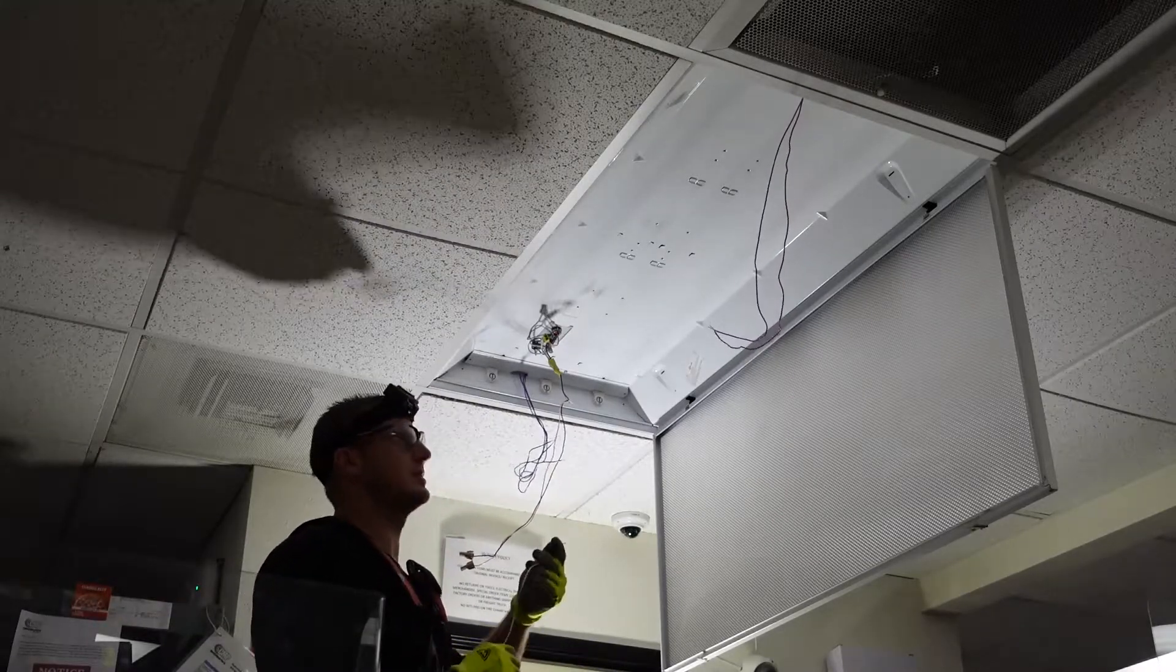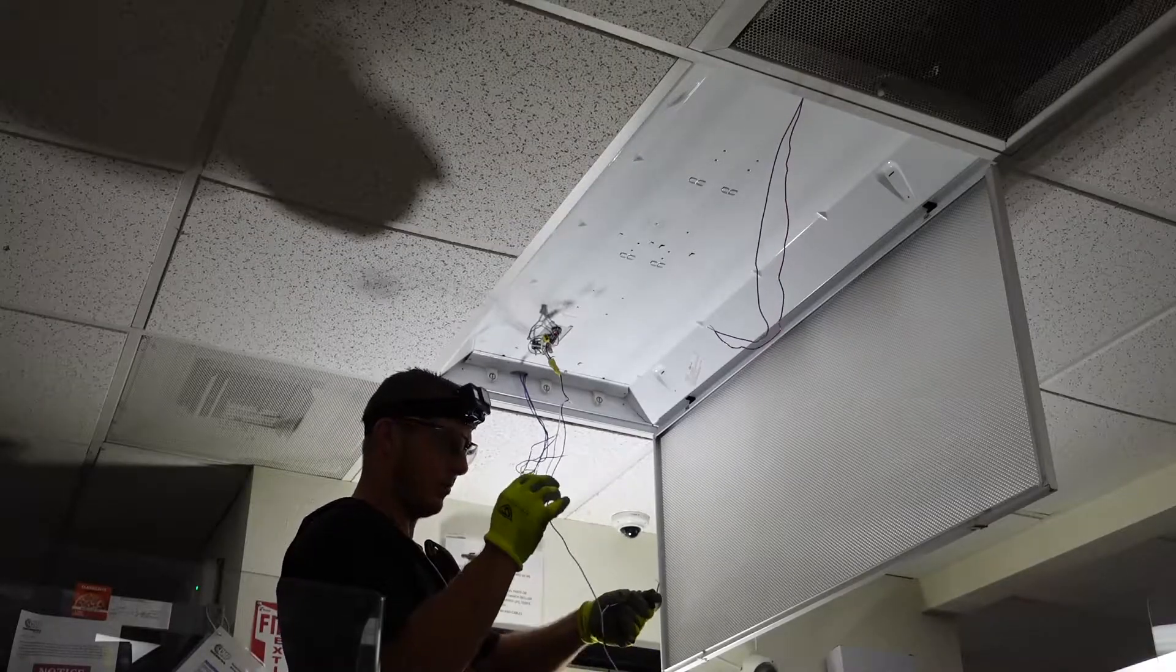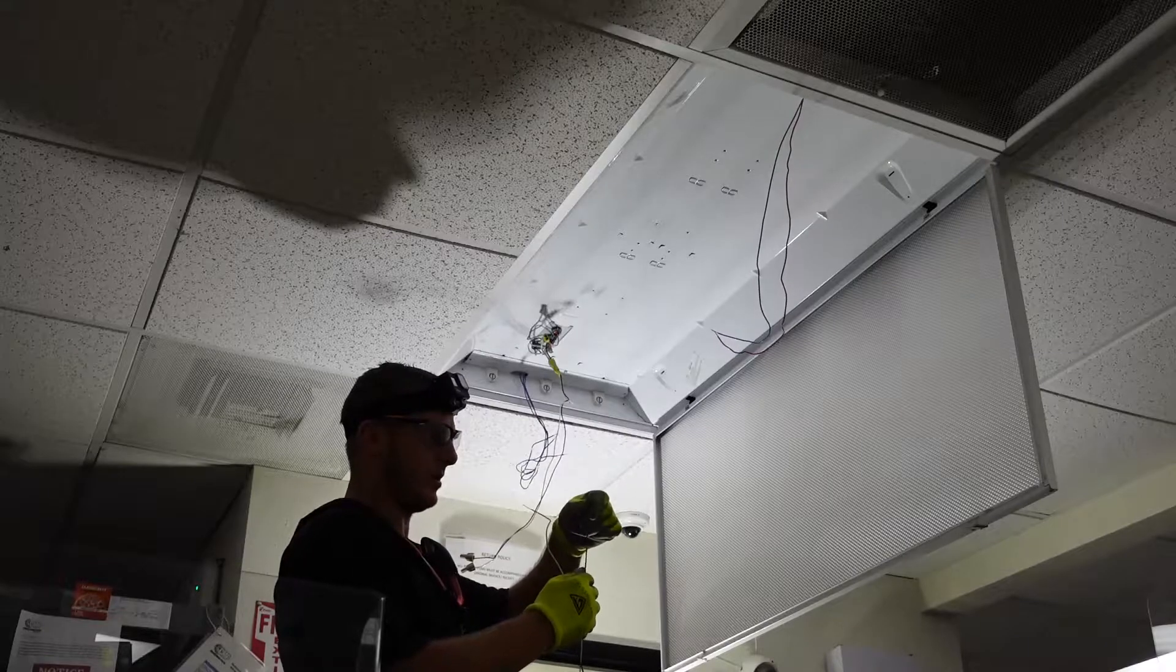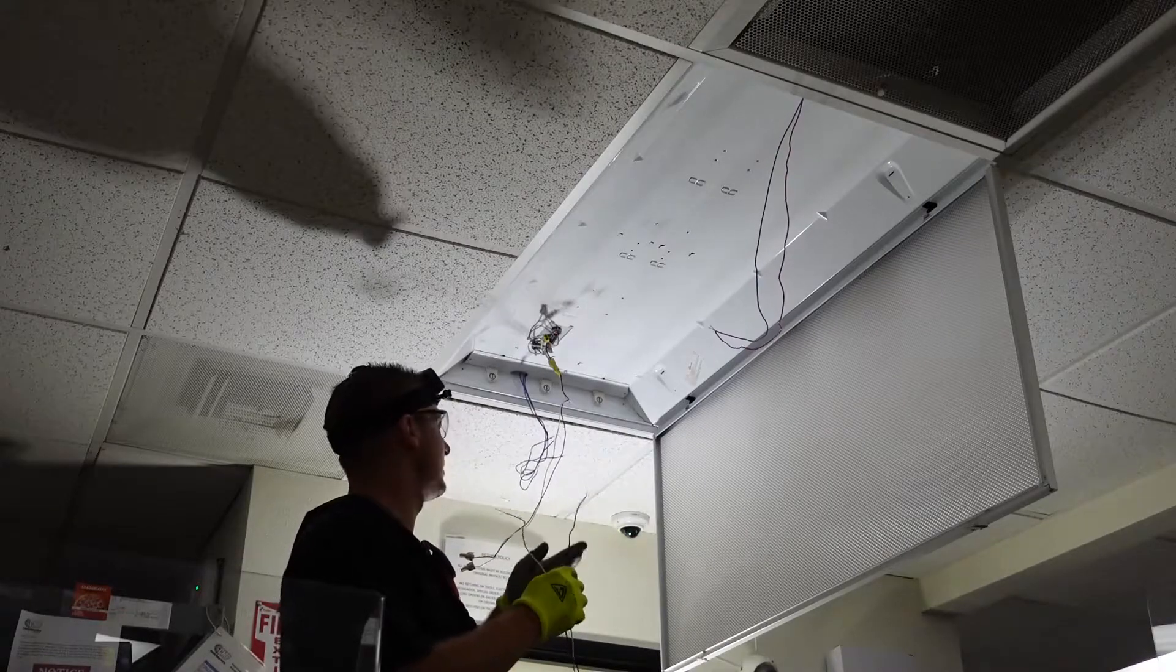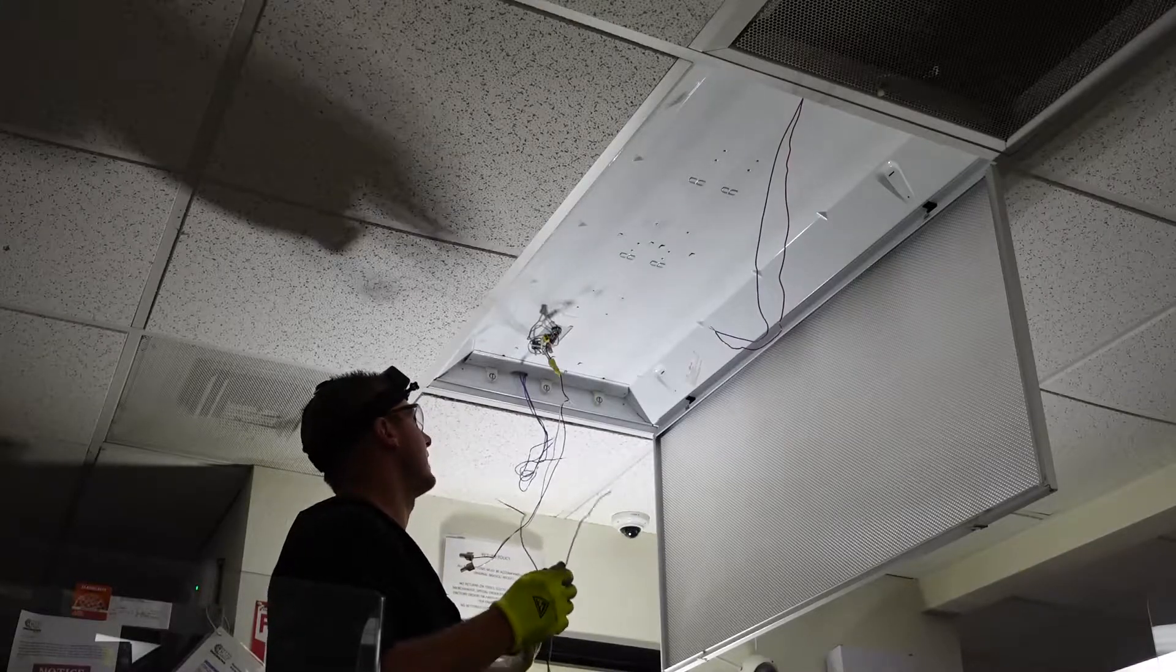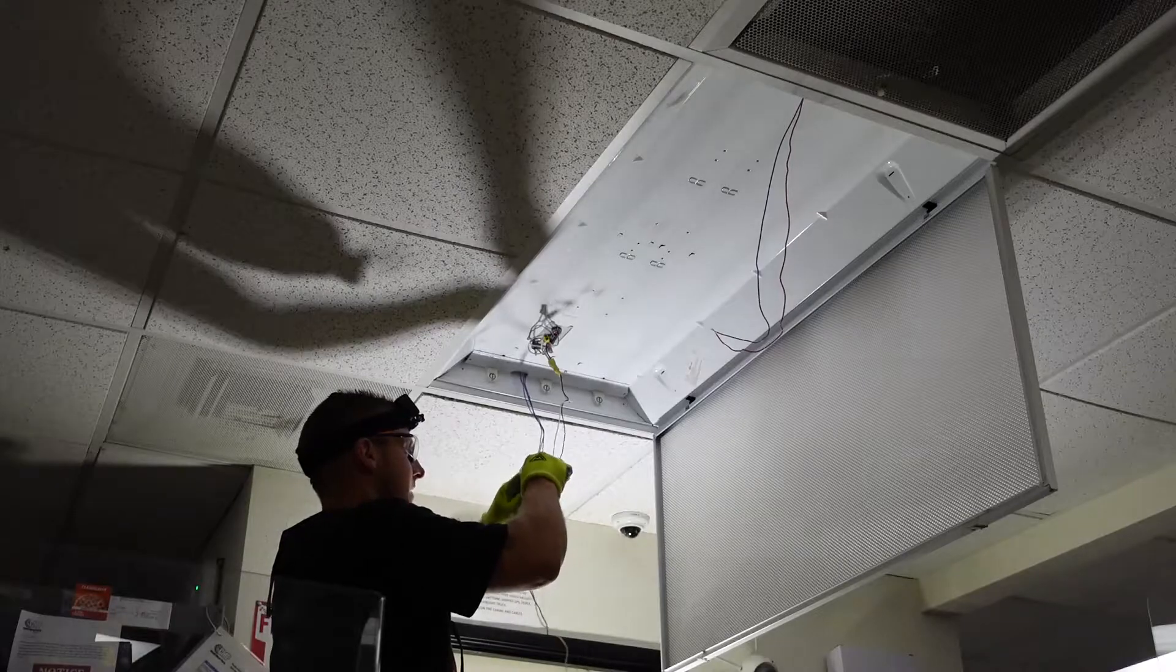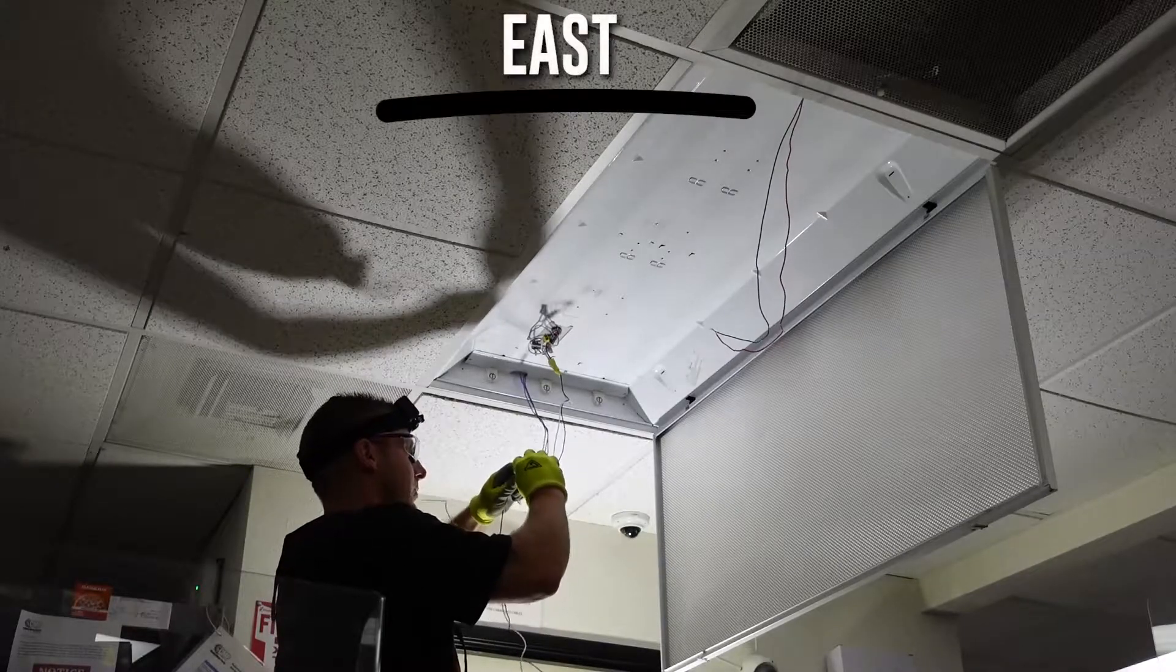So now we have to decide which side is going to be our neutral or our white side and which side is going to be our hot side or our black side. I typically like to keep it all the same if I'm doing a lighting project and I've been doing the hot to the east side of the building. So we're going to keep it that way.